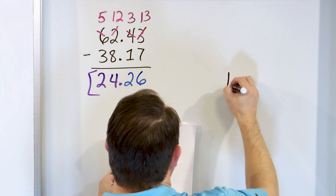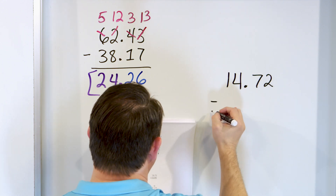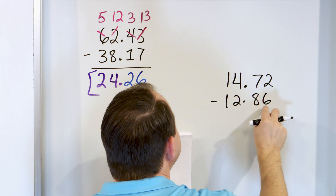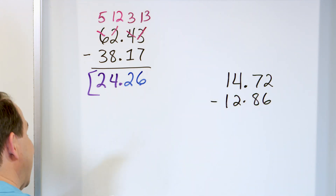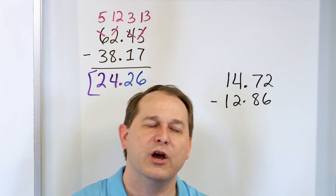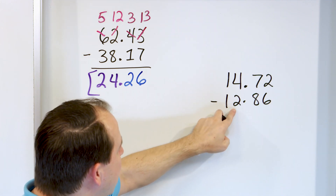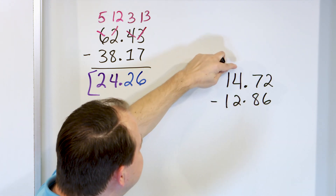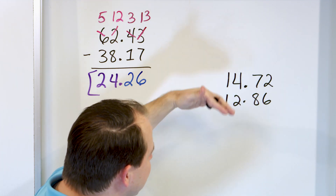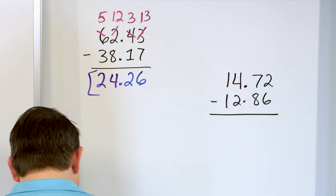All right, only two more problems. What about 14.72? And we'll subtract from that 12.86. Now, when you have two digits like this, you can often just think about it as dollars and cents — there are 100 cents in a dollar. So this is $12.86 and this is $14.72. So when we subtract them, you can think of it as subtracting money.